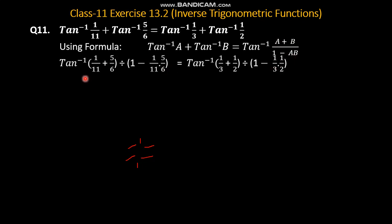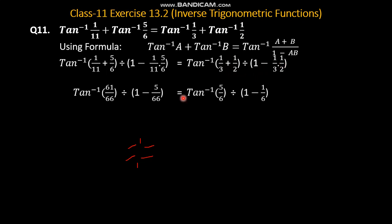Simplify. Left hand side: A plus B is 1 over 11 plus 5 over 6, and 1 minus A into B is 1 over 11 multiplied by 5 by 6. Similarly right hand side: A की जगा आगया 1 over 3, B की जगा आगया 1 over 2. यह होगा tan inverse 1 over 3 plus 1 over 2 divided by 1 minus AB, यानि 1 over 3 और 1 over 2 का product.